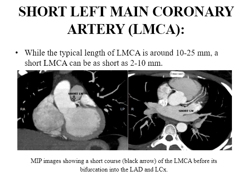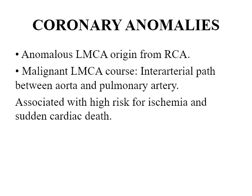The normal length of the left main coronary artery is around 10 to 25 mm, and the short left main coronary artery can be as short as 2 to 10 mm. Regarding coronary anomalies, the anomalous left main coronary artery may originate from the right coronary artery with a malignant interarterial course between the aorta and the pulmonary artery, which is associated with a risk of ischemia and sudden cardiac death.